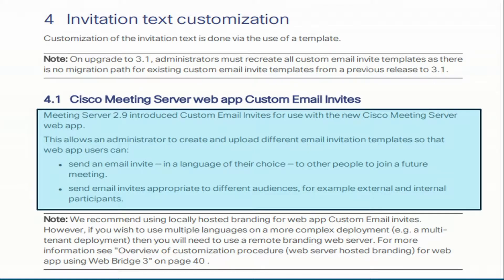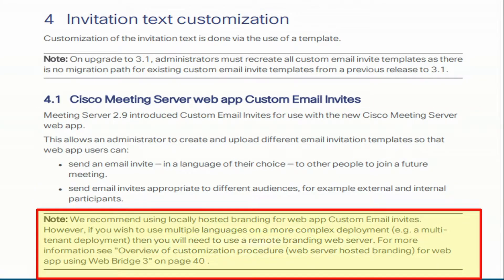They can also send email invites appropriate to different audiences — for example, an external audience and an internal audience. Cisco highly recommends locally hosted branding for the web app and custom email invites. However, if you have more complex deployments, like a multi-tenant deployment, you will have to use the remote branding server.